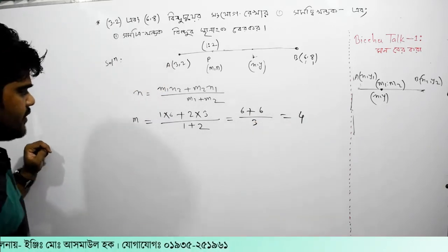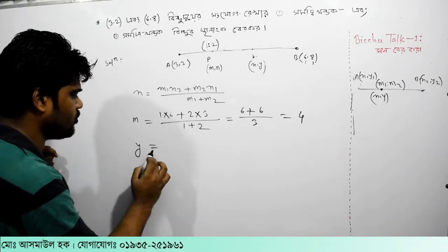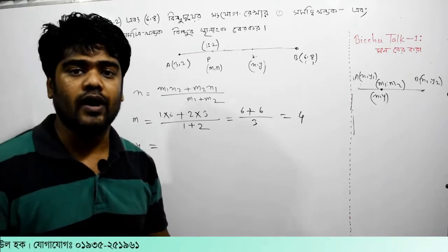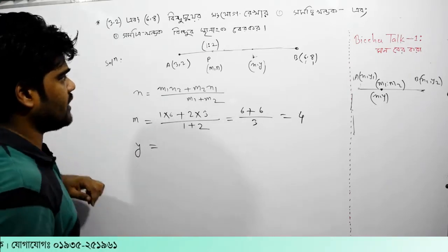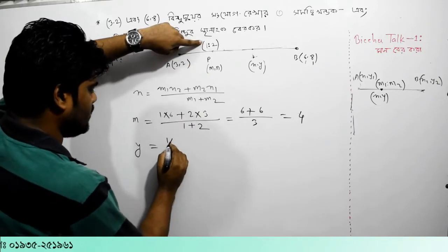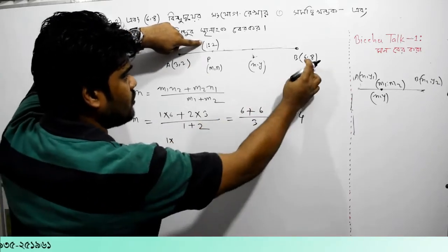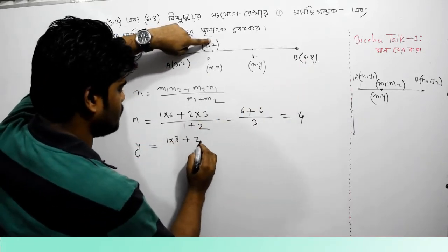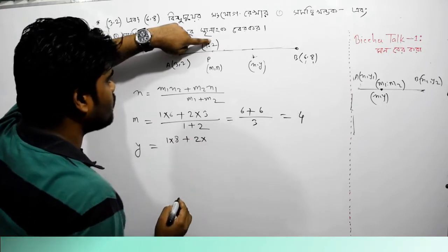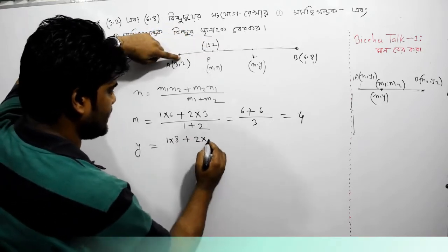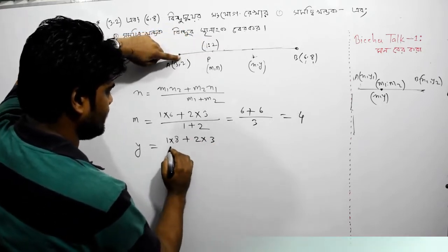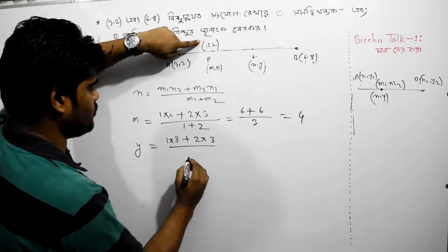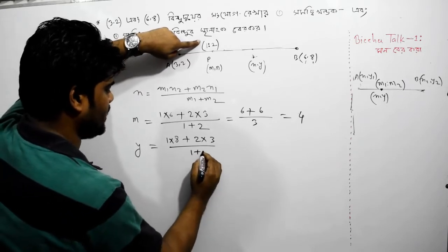Excer maanbir hoye gase. Ekhon jokon wire maanbir korubo, tokono sutra ki m1, y2. Tala shara shari maan basahi dhi — m1 kato 1, y2 kato 8, m2 kato 2, y1 kato 3, divided by kato m1 plus m2, 1 plus 2.